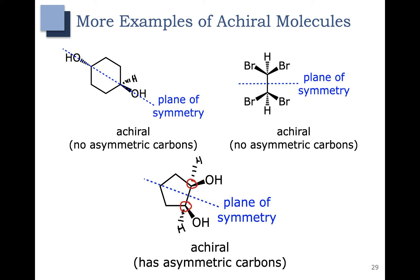So we have asymmetric carbons, but the molecule is achiral, and that's because of this plane of symmetry here. So even though we have asymmetric or chiral carbons, the whole molecule is achiral because of the plane of symmetry. This compound we can refer to then as a meso compound. Meso compounds have chiral carbons but are overall achiral due to a plane of symmetry.